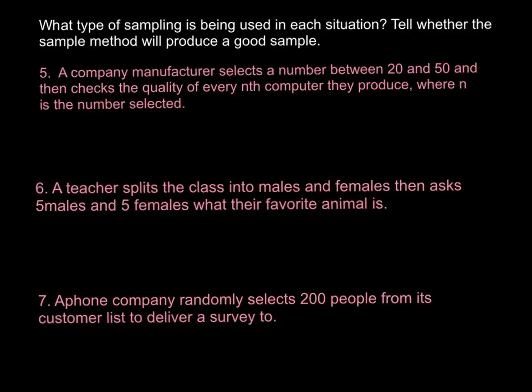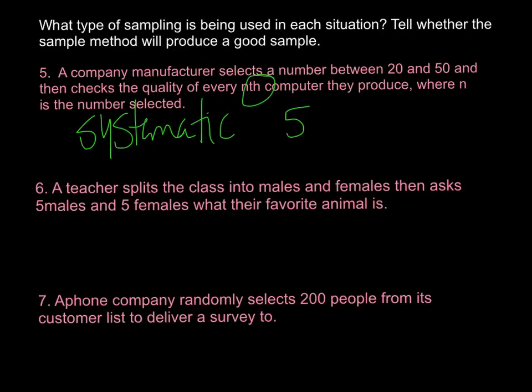These are very good questions, so make sure you get some information down. First, it asks what type of sampling is being used and whether the sampling method will produce a good sample — meaning it's not biased. A company manufacturer selects a number between 20 and 50, then checks the quality of every nth computer they produce, where n is the number selected. This is systematic because they're picking every nth computer. And yes, it would produce a good sample.